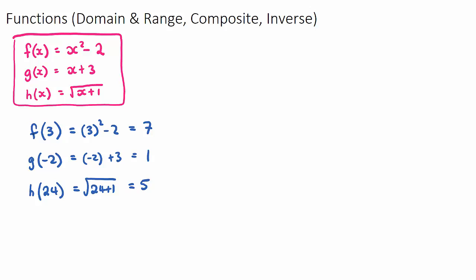Next we move on to domain and range. These are two important words for functions and relations. The domain is associated with the possible x values, and the range is associated with the possible y values. The domain is the input and the range is the output. Let's look at our first function, f(x) = x² - 2, which is a quadratic function.